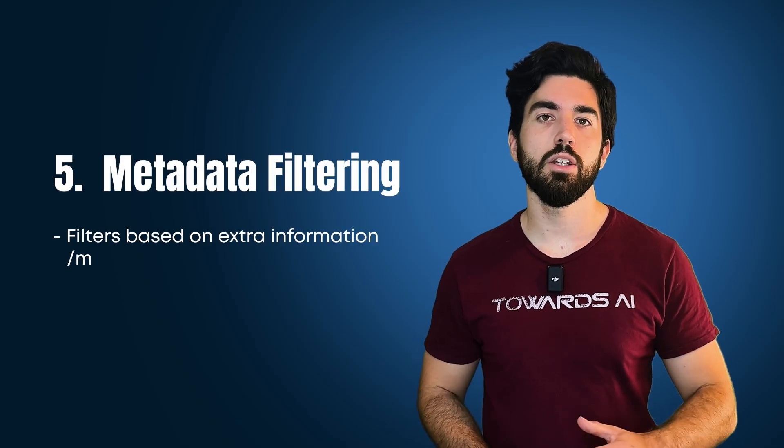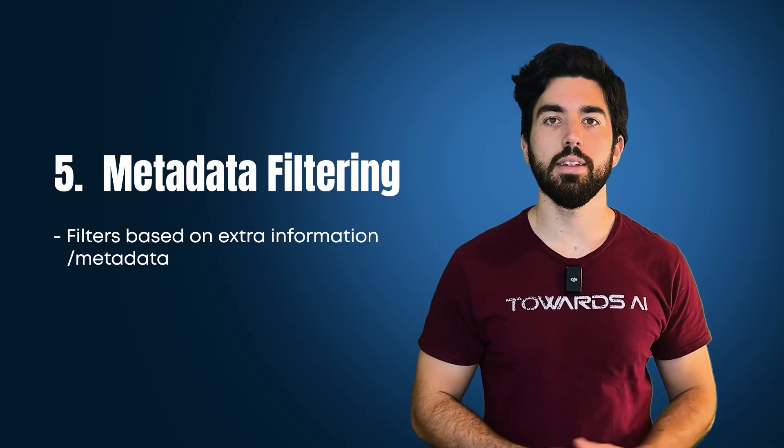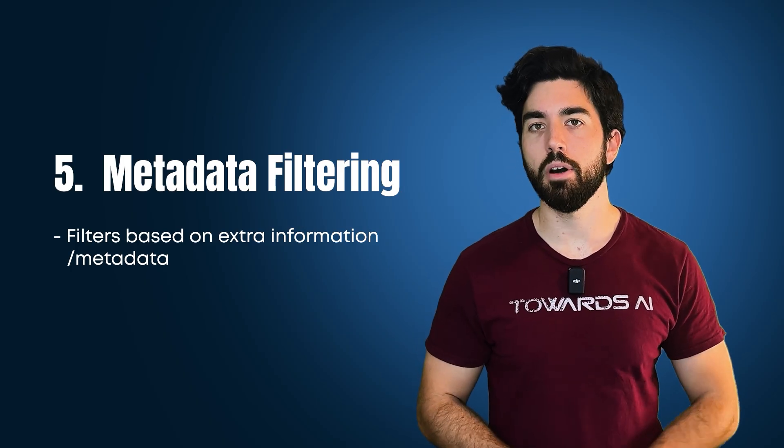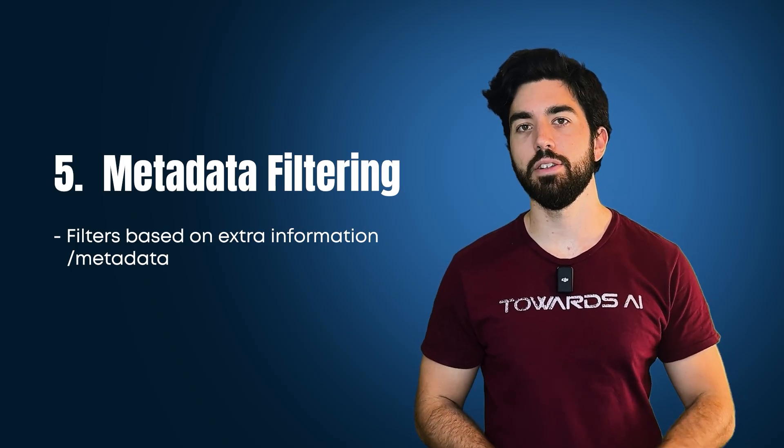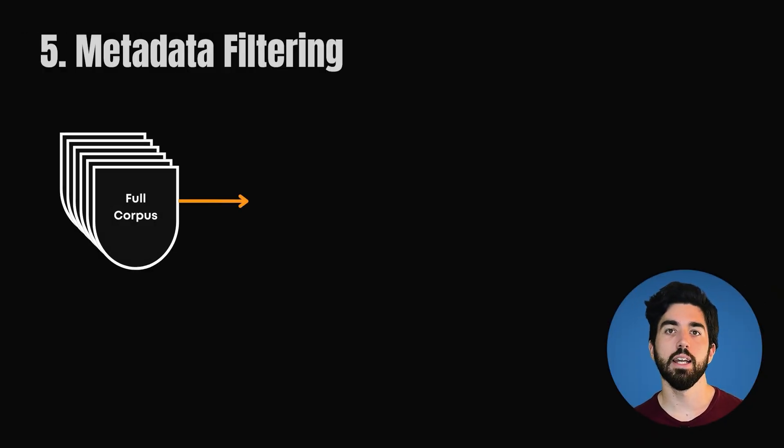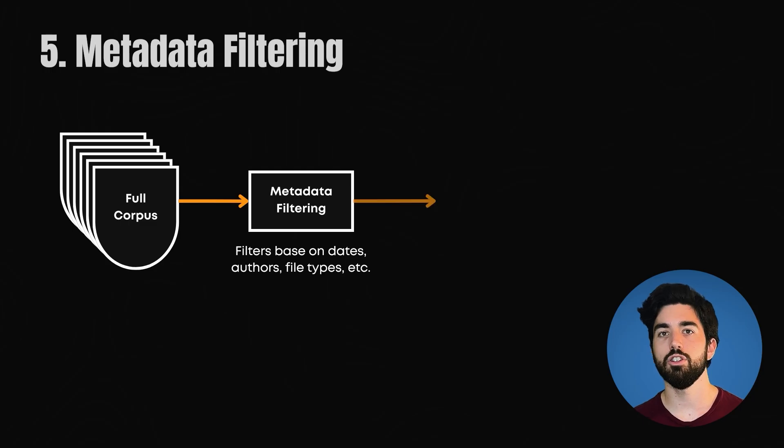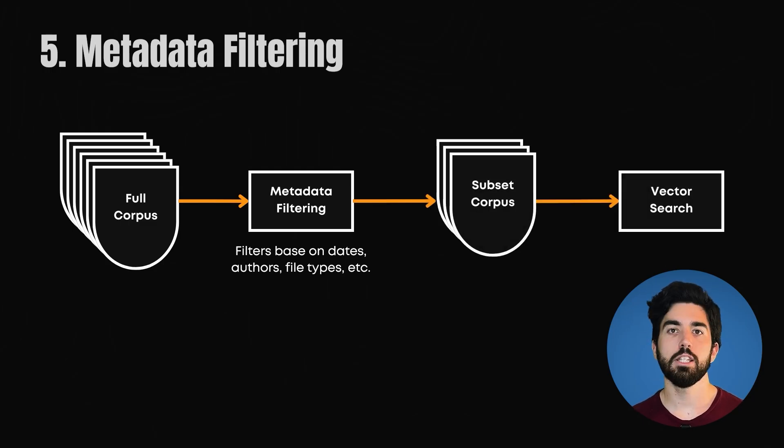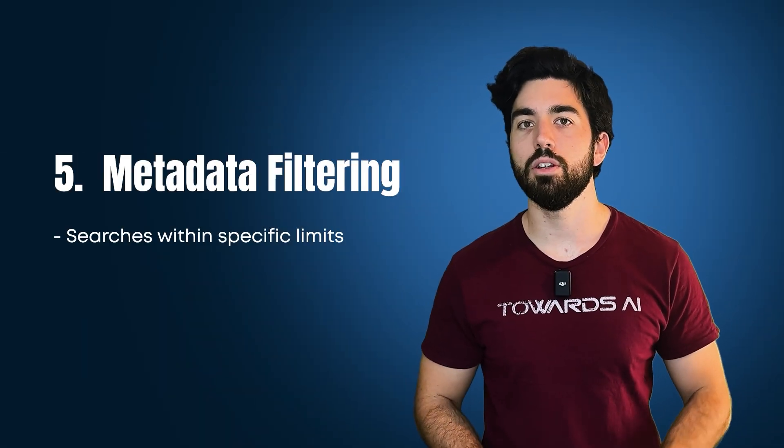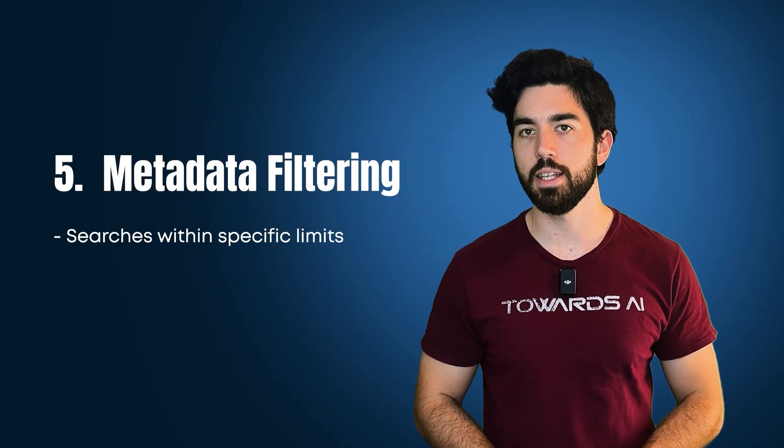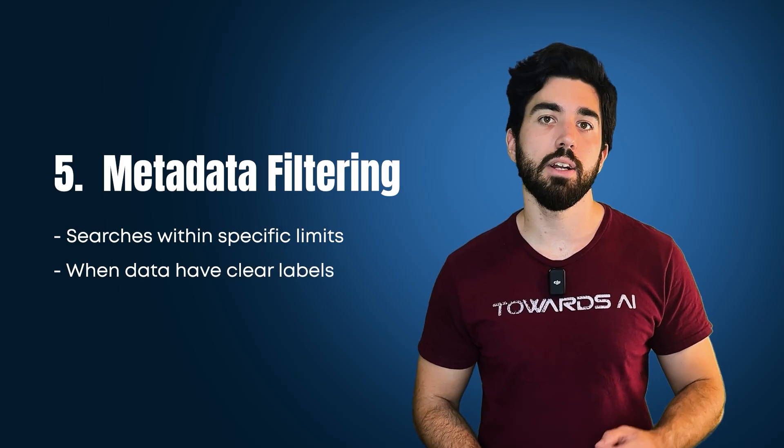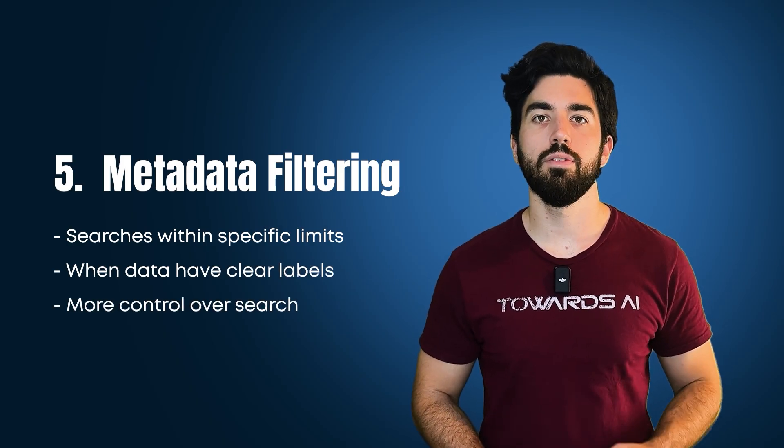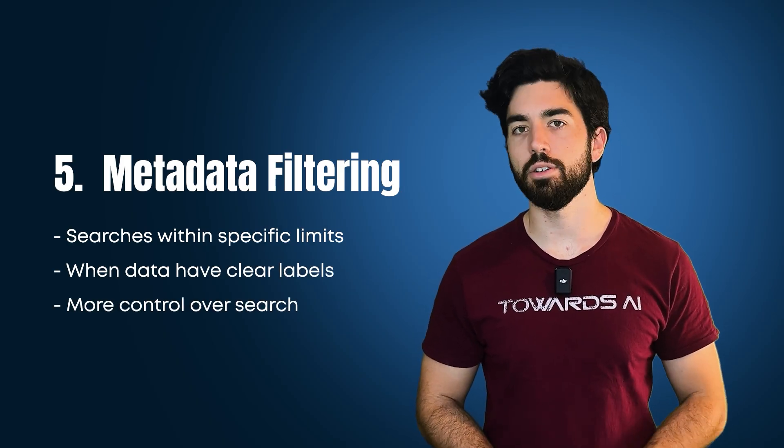Sometimes, the key to finding what you need isn't in the main text but in the extra information about it. That's metadata filtering. Metadata filtering lets you narrow down your search using things like dates, authors or file types. It's basically about using labels to organize your files. Use metadata filtering when you need to search within specific limits. It's great when your data has clear labels or when you want to give users more control over their search.